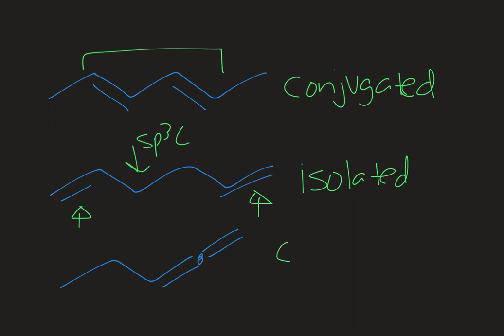And then the last molecule is called cumulated in the way that its double bonds are sharing a central carbon with one another. And these are very unstable and not very common under standard temperature and pressure conditions.